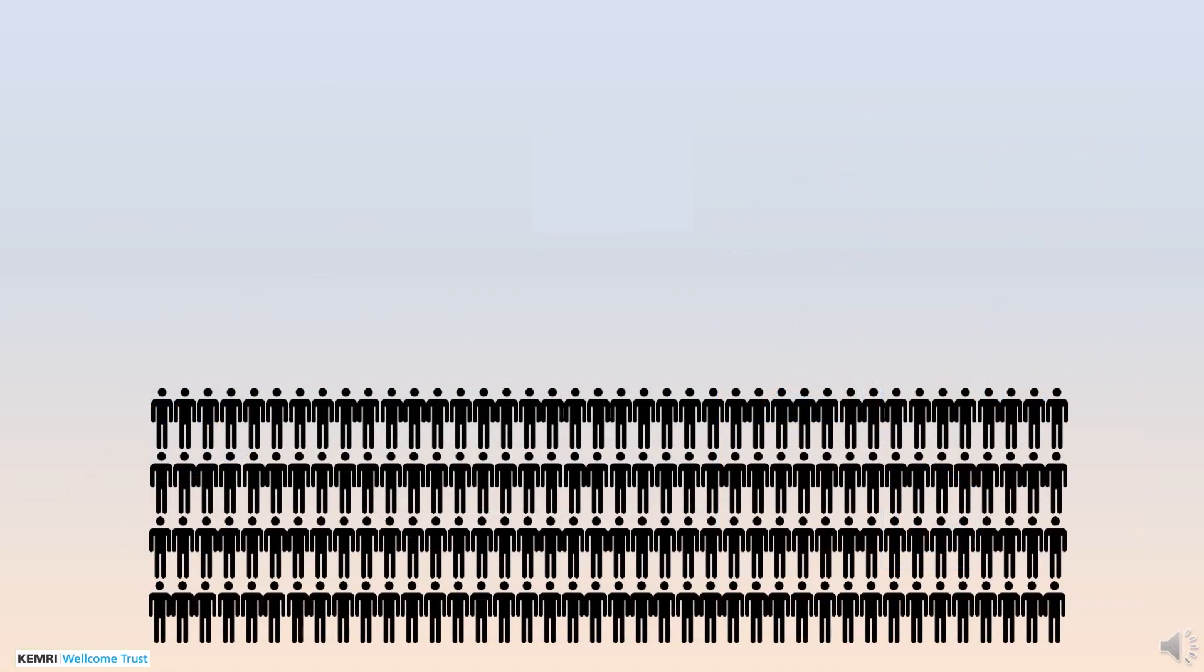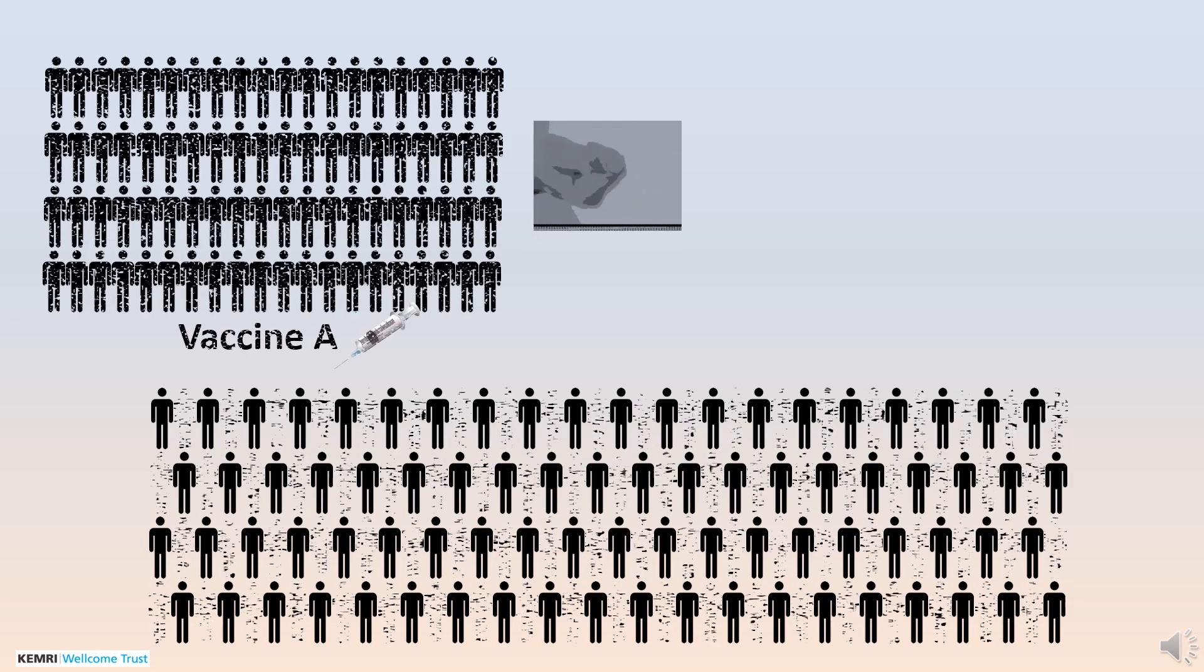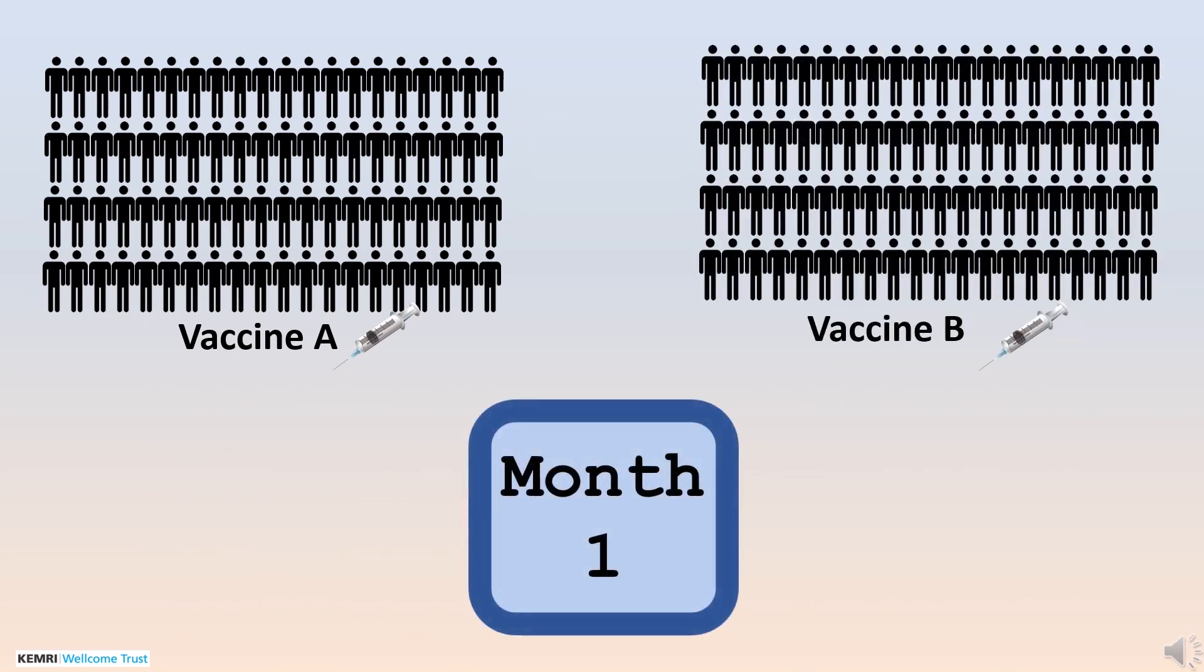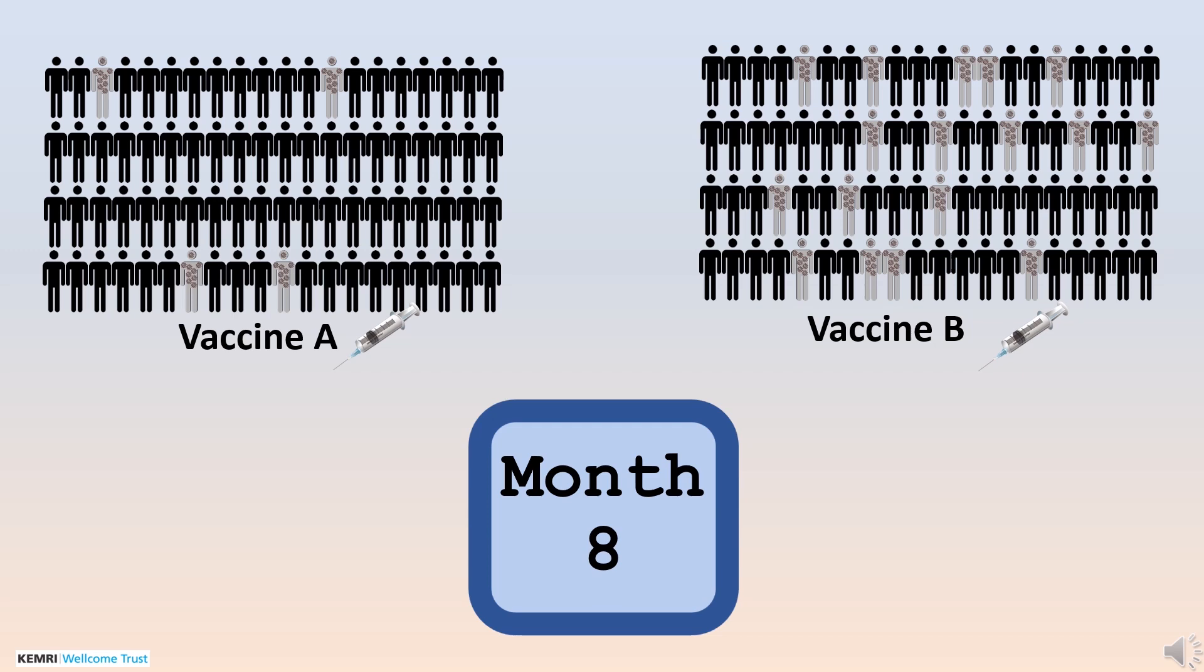When researchers are confident that the research can proceed, 360 new participants will be recruited. Again, chance will be used to decide the vaccine which participants are given. Half the participants will be given CHADOX-1 and the other half will receive the control. Over the next 12 months, all the participants, including the initial 40 volunteers, will be monitored and checked regularly. As new infections inevitably occur, researchers will be able to see whether the trial vaccine CHADOX-1 gives better protection than the control.